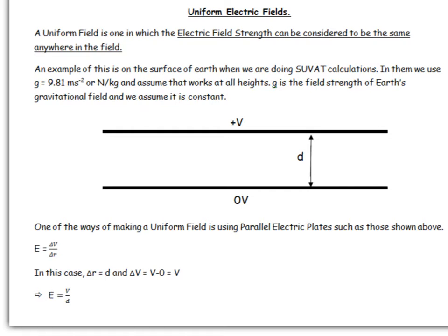A situation where you've come across this before is when we're doing calculations here on Earth. When you're doing SUVAT equations, we use g equals 9.81 meters per second squared, or in terms of field strength, newtons per kilogram. We don't change that value of g when we're working at different heights, we just keep it the same.